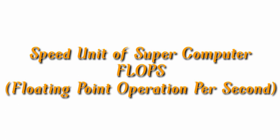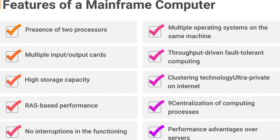The first supercomputer in the world is TITAN. The speed unit of a supercomputer is FLOPS — F-L-O-P-S — and the full form of FLOPS is Floating Point Operations Per Second.